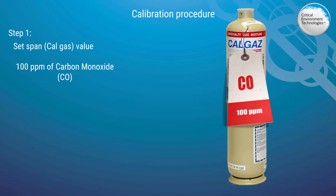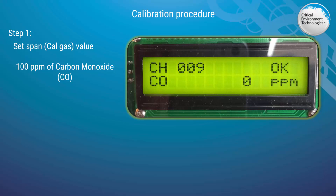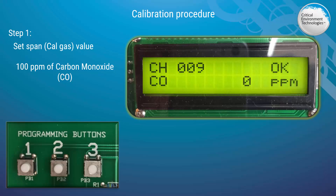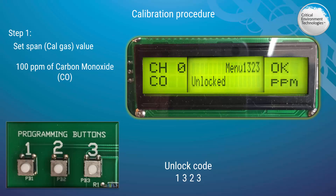To begin, we must first unlock the security settings of the PDC controller so we can use the programming buttons. With the PDC open, look for the LCD display and find the 1-2-3 programming buttons to the left of the display. The image on your screen shows an enlarged view of the display and the programming buttons. The unlock code is 1323. Enter the code by pressing the programming buttons in the order given. You will see 'unlocked' on the display briefly and then it will return to normal.